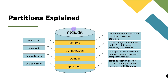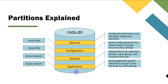We call Active Directory a database. What you're looking at is basically a large database. When you build this database, the context is named ntds.dit, and it contains different partitions of data — for example: schema, configuration, domain, and application — each with its own set of rules and configuration.